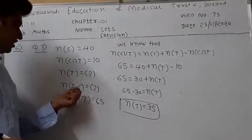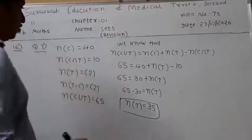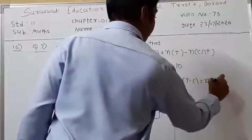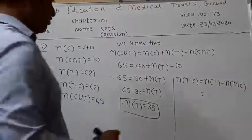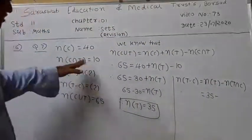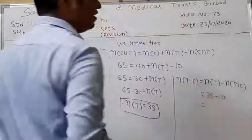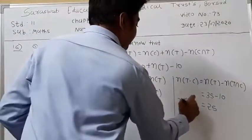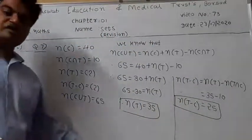The second question: people who like to play tennis but not cricket. That means N of T minus N of T intersection C, which equals 35 minus 10, and we get 25.